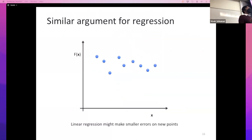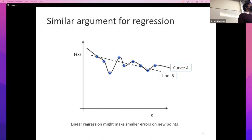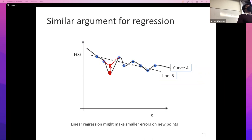You can apply a similar argument for regression. Remember, regression is the problem of predicting a real number. I could have a curve A that goes through every example - given an input point x we predict some real number - or I could have a line that ignores the wiggliness. The line might be preferable because the curve is trying to fit all the noise in the data. If you insist that your learner produce a curve that perfectly fits your data, you're guaranteeing that it fits the noise in the data.